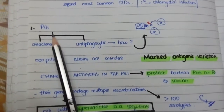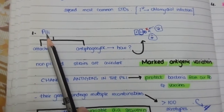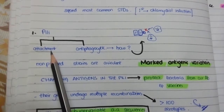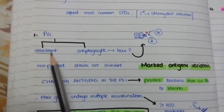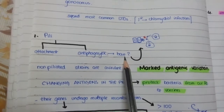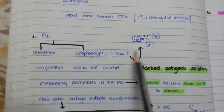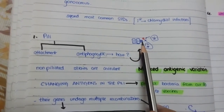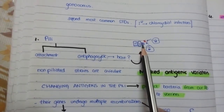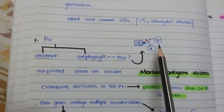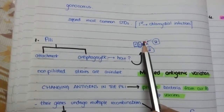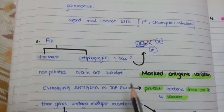First of all, we have the pili. The pili aid in attachment of the bacteria to the host cell and they also have an antiphagocytic role. This is because the pili cause the bacteria to attach to the epithelial cells so tightly that the phagocytic macrophages and neutrophils cannot reach the bacteria.